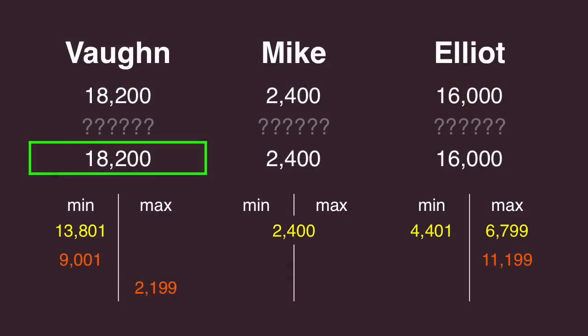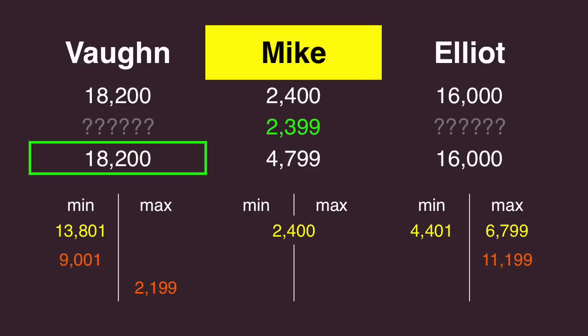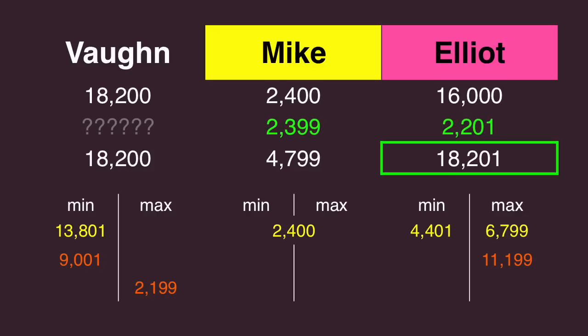As for how our players did, Mike got it right, $2,399. Elliott also got it right and wagered just $2,201. Unfortunately, that's not a good wager because it doesn't cover the unsafe wager by Vaughn, so I've got to give him the pink on that one.